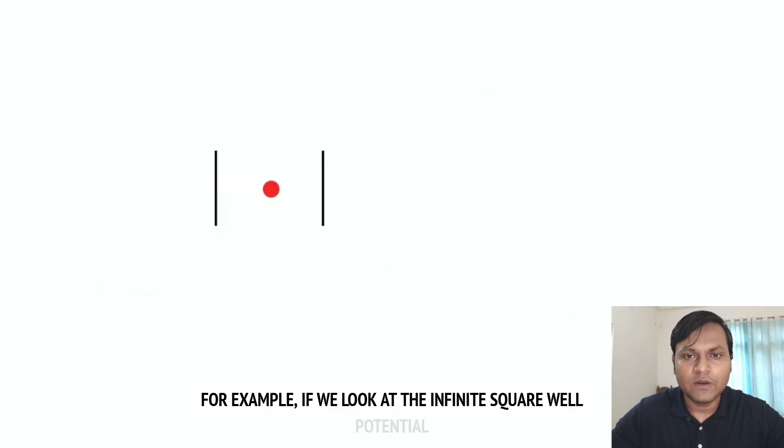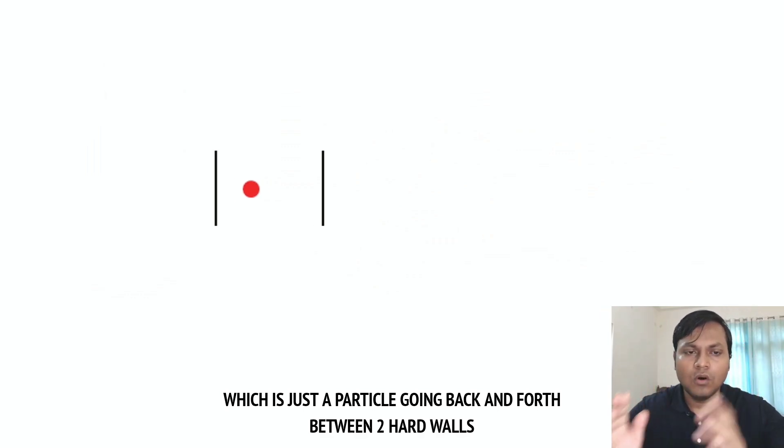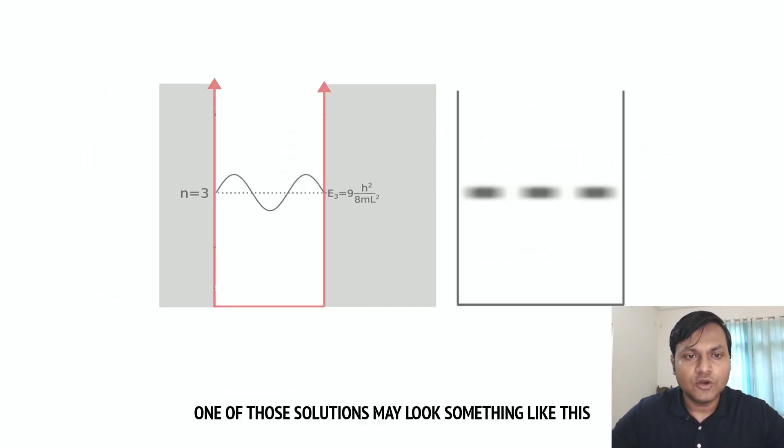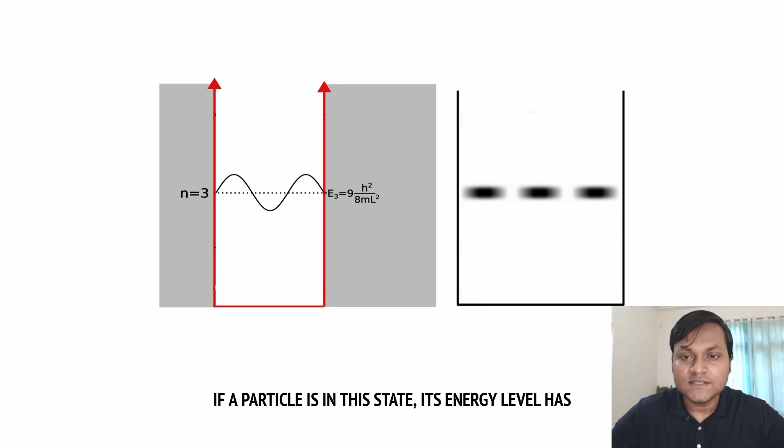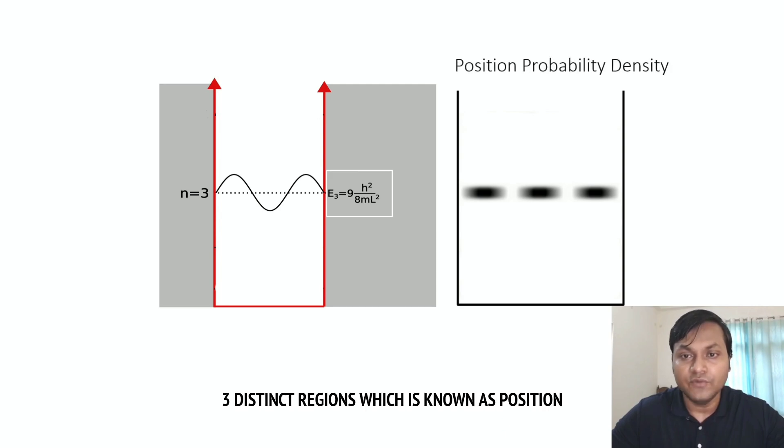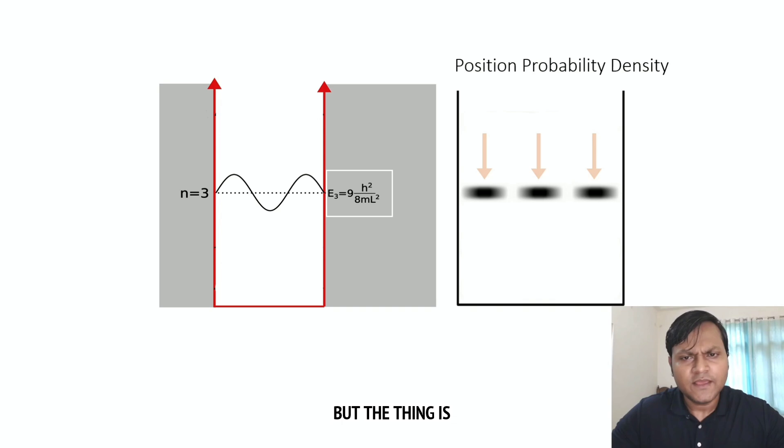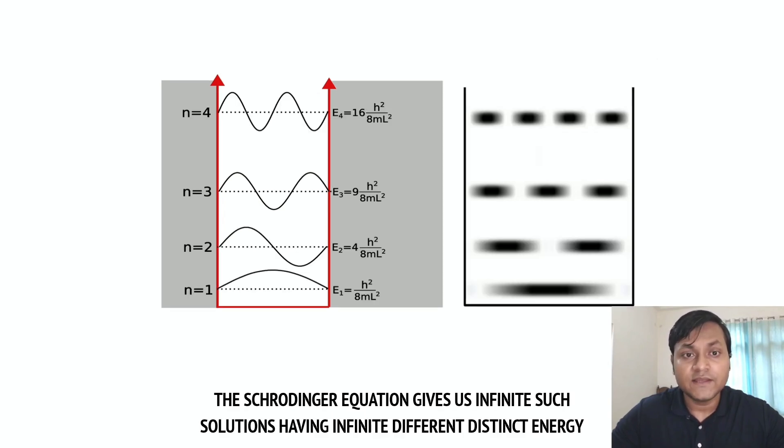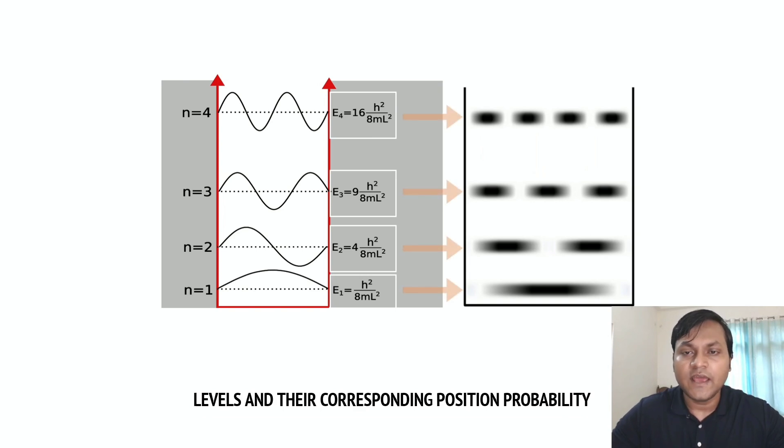For example, if we look at the infinite square well potential, which is just a particle going back and forth between two hard walls, one of those solutions may look something like this. If a particle is in this state, its energy level has a very distinct value, and it is very likely to be found in these three distinct regions, which is known as position probability density. But the thing is, the Schrodinger equation gives us infinite such solutions having infinite different distinct energy levels and their corresponding position probability densities.